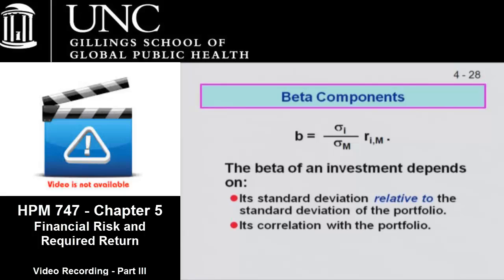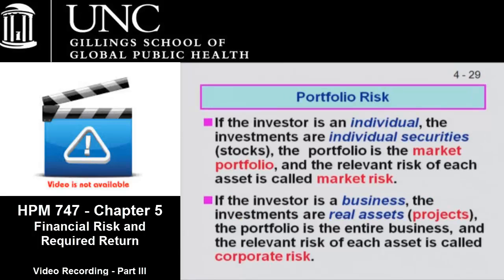If R_iM is negative, then you're going to get a negative beta. Negative beta stocks generally don't exist. But you can tell that if sigma_i is twice as large as sigma_M, that's going to produce higher betas because the stock's variation is greater than the market's variation. So there are two things going on in beta.